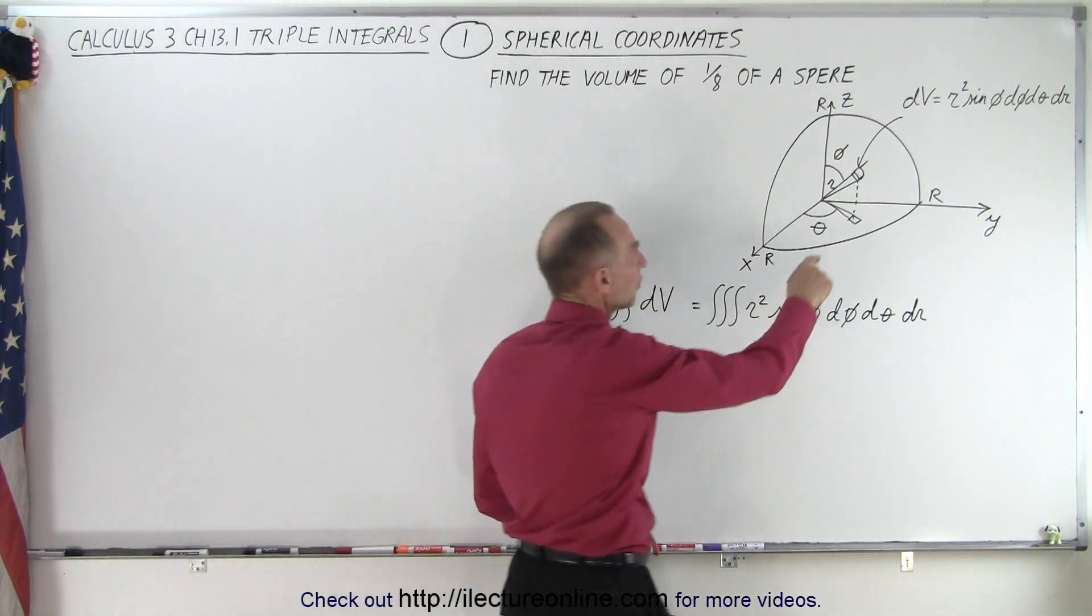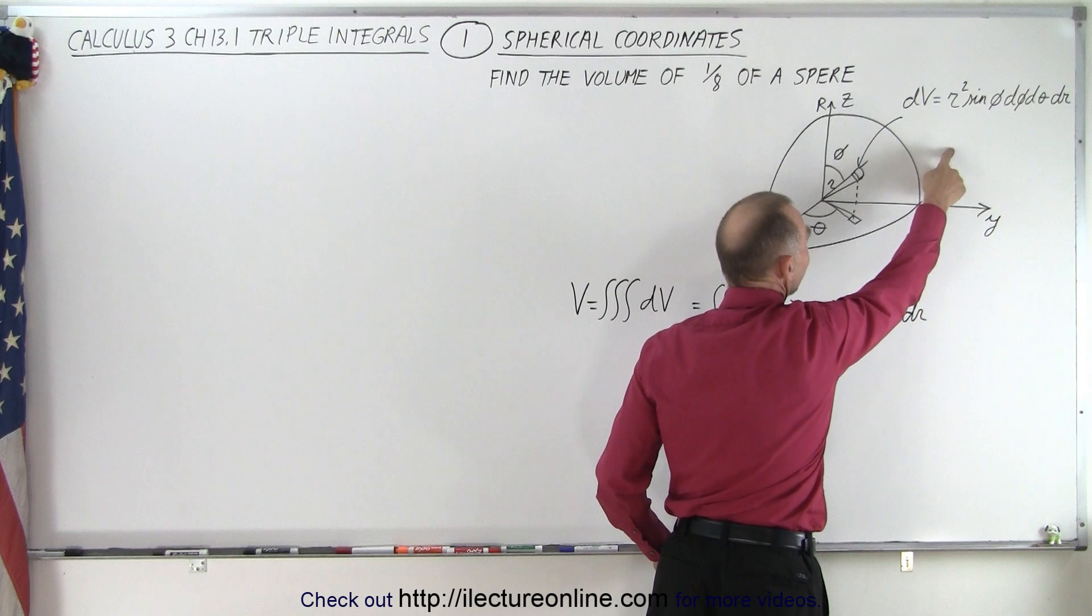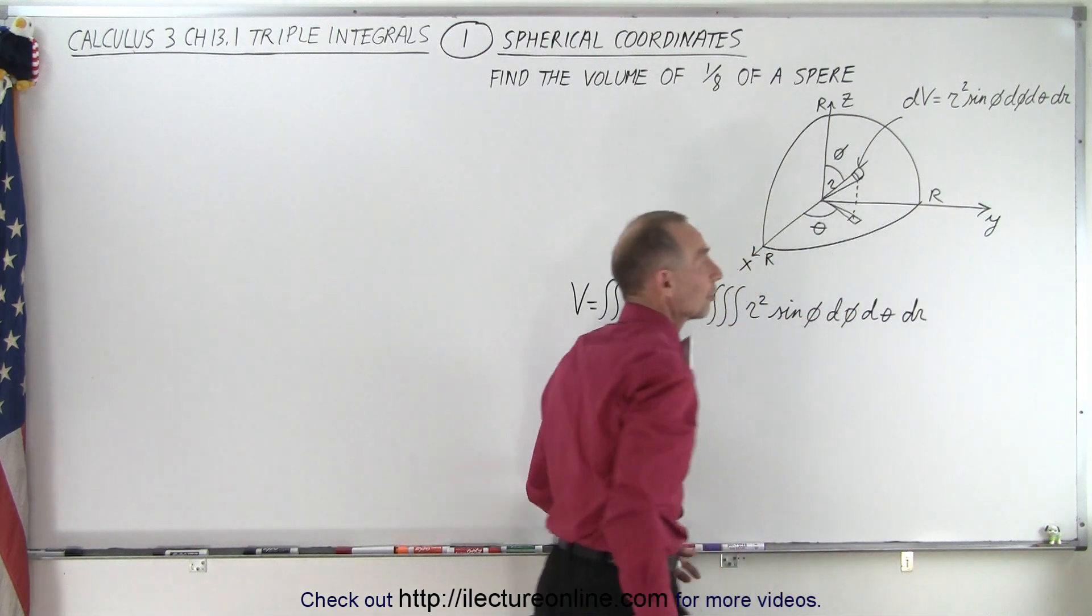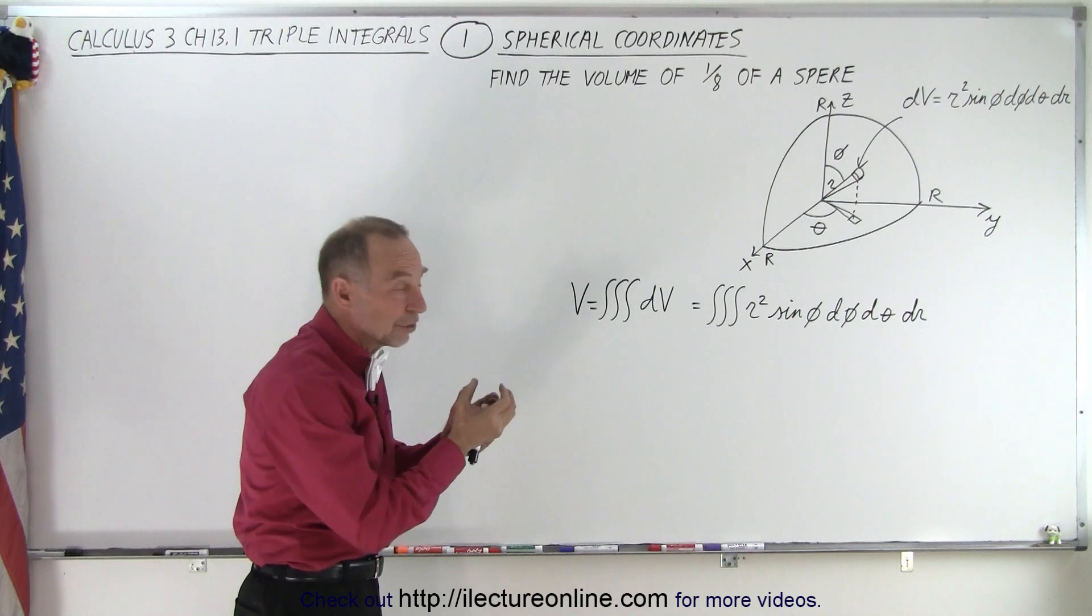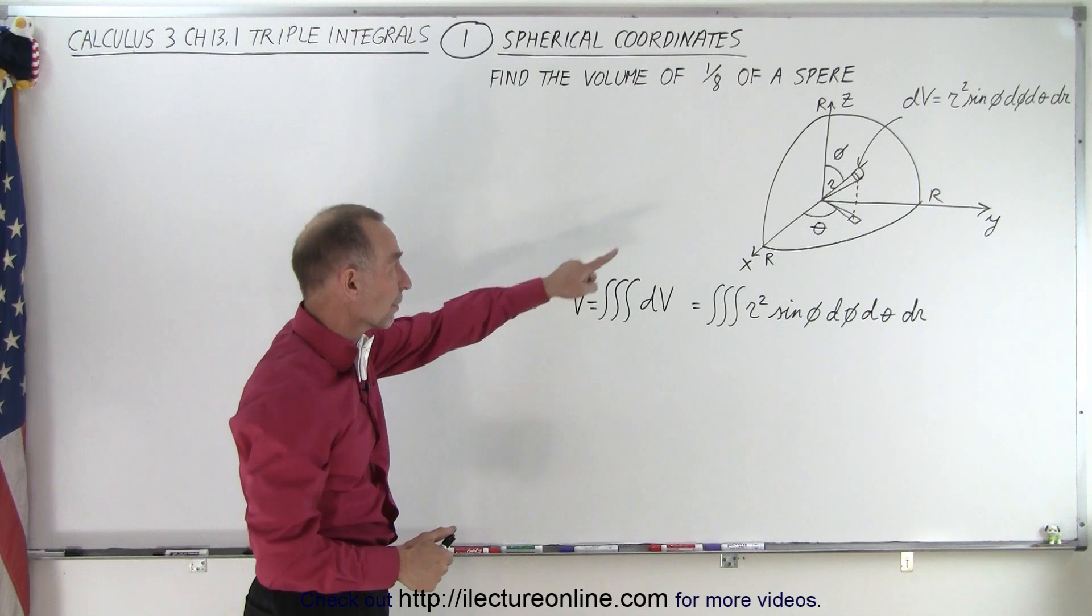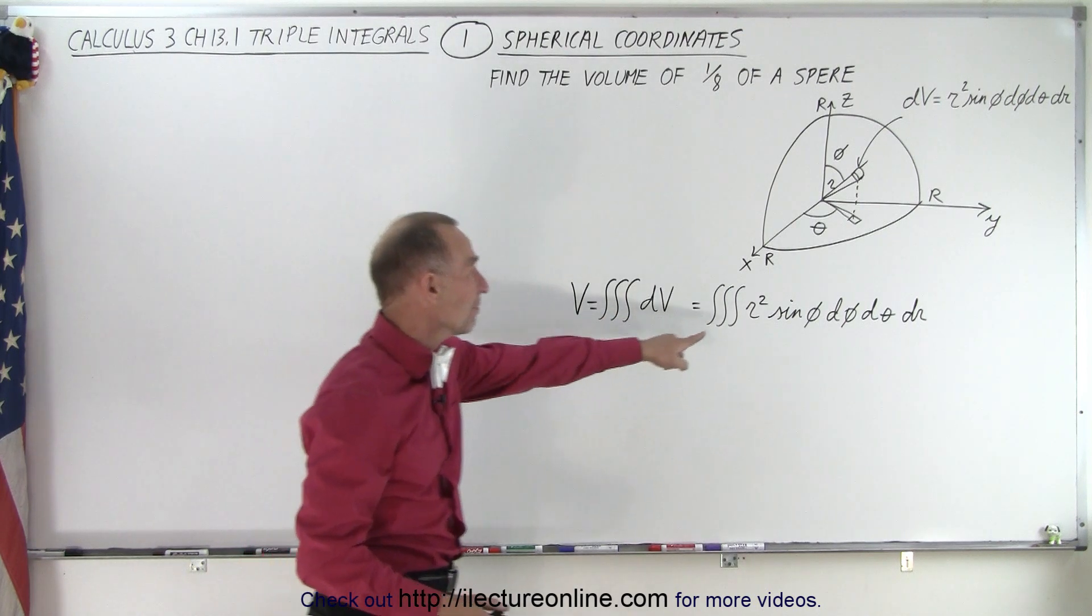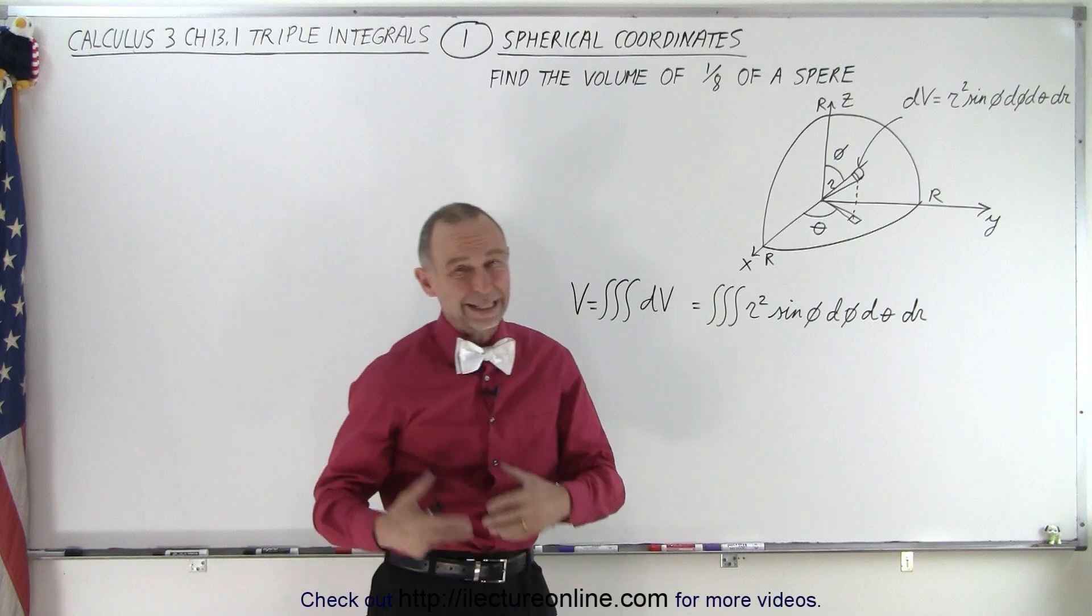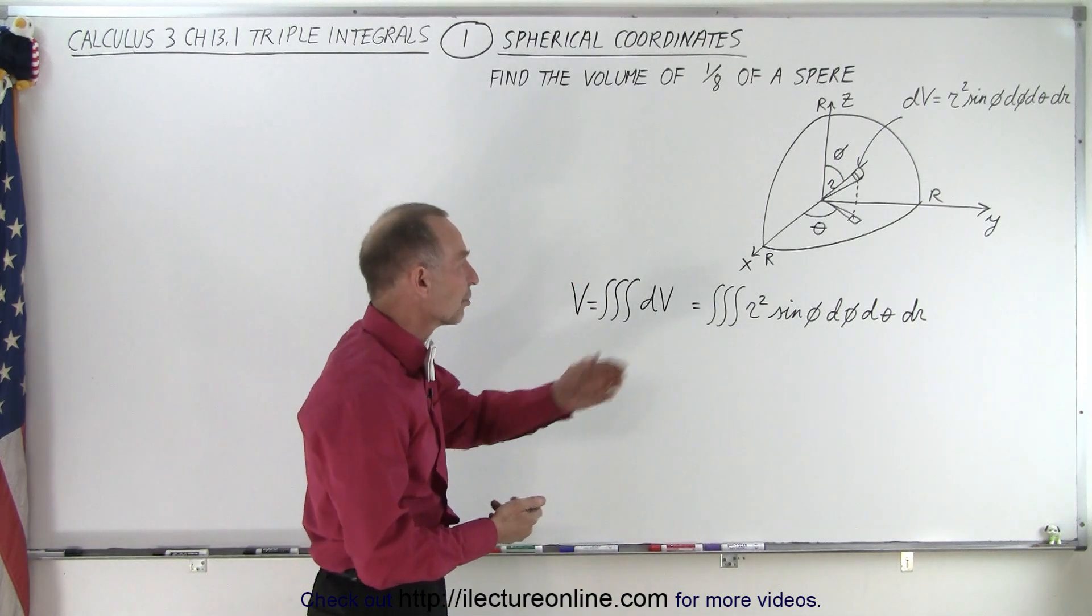Notice that the volume element dV can be defined as r squared sine of phi d phi d theta dr. So that would be representative of the volume element in spherical coordinates. And so if we're going to find the volume of that object, we need to do a triple integral over dV. Now the key, of course, is to put in the correct limits of integration for each of the three.